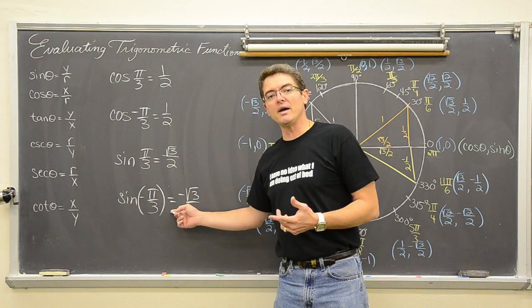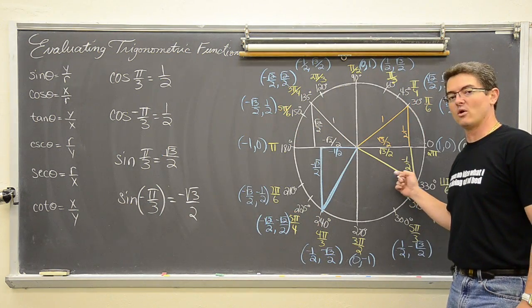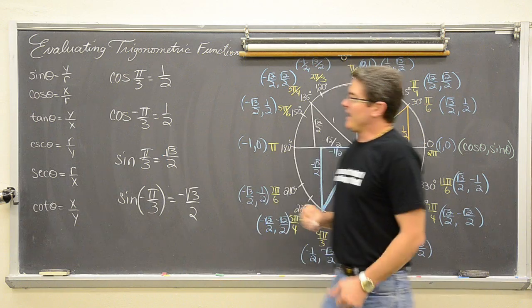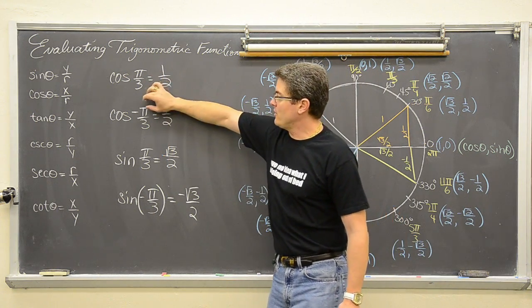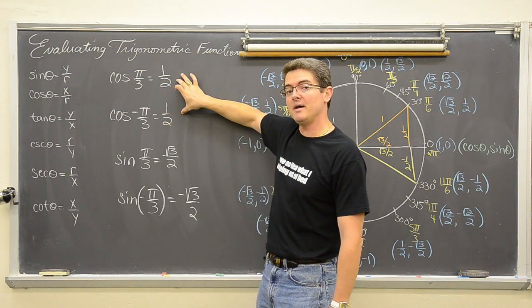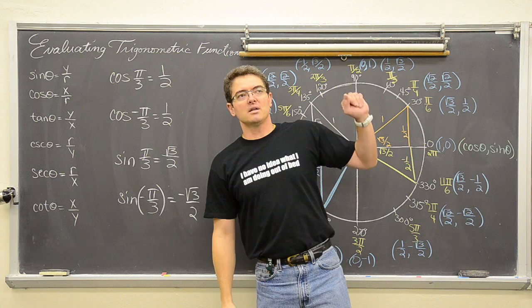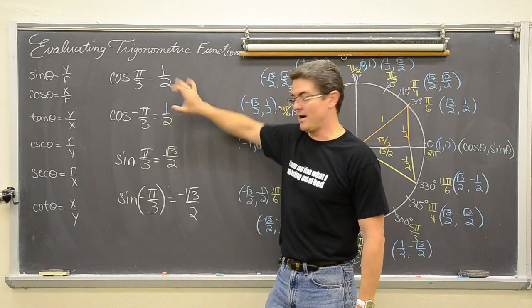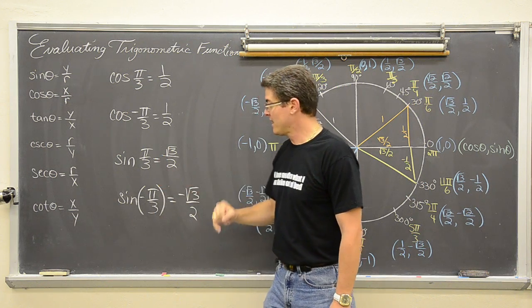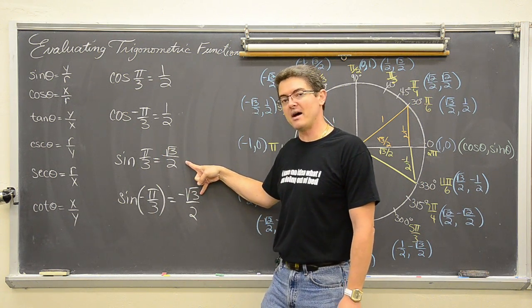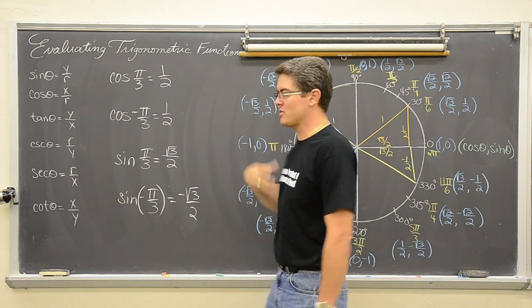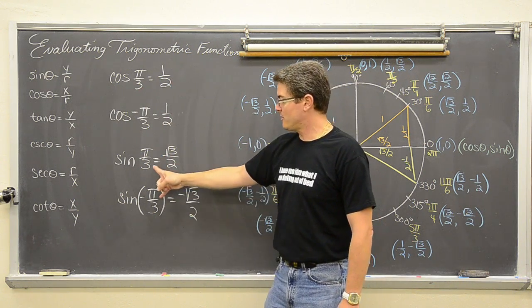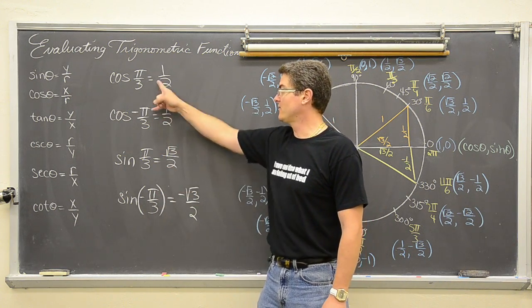Why? Because sine is based off the y coordinate, and when you are down in quadrant four, your y value is going to be negative and thus your sine value is going to be negative. We will be learning later that the cosine function is an even function — when you plug in opposite values of theta you get the same output. With the sine function, plugging in opposite values of the domain gives you opposite values of the range. This is the odd function. So sine is odd and cosine is even.